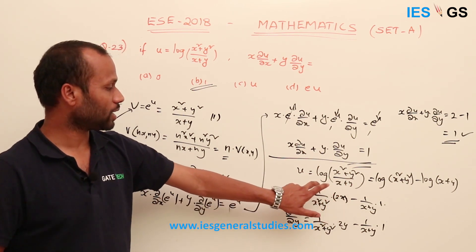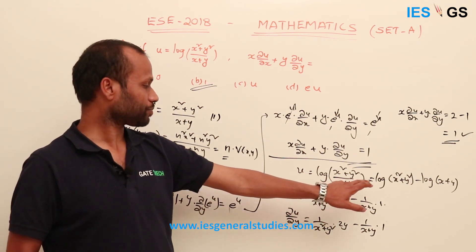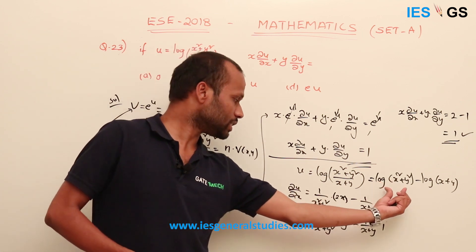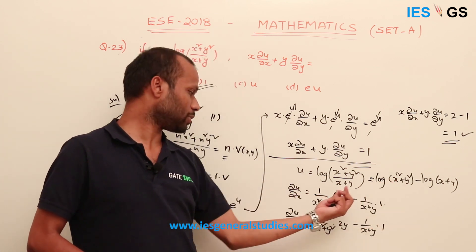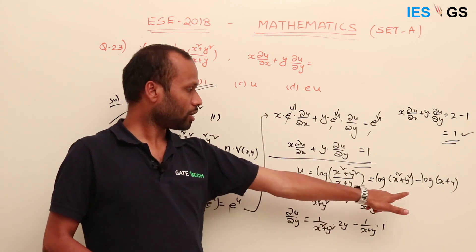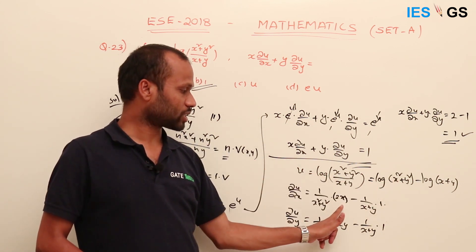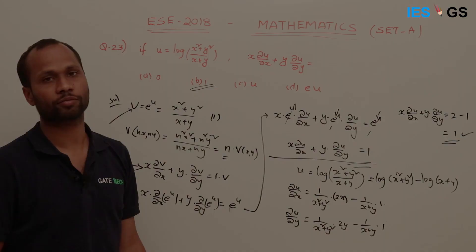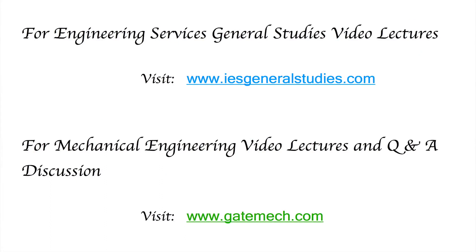The key trick in direct differentiation is to write log(a/b) as log(a) − log(b), making it easier to differentiate. The derivative of log(f(x)) is 1/f(x) · f'(x). For engineering services and general studies video lectures, visit www.ilesgeneralstudies.com.